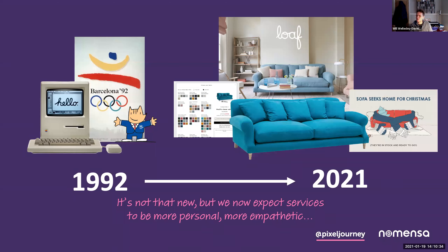Over time that's become much more sophisticated. An example is Loaf, a furniture brand that's brought together a much more sophisticated tone of voice, a use of language and function. They have both the emotion in the context of where their products sit and how that changes your lifestyle, but also functions on their website that help you calibrate different fabrics, cushions and details. Users are getting much more sophisticated in their expectations for how sites can be more personalized.